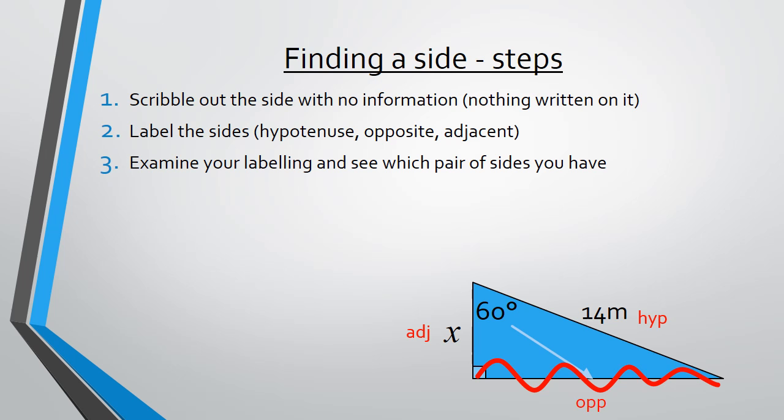Step 3, examine your labelling to see which pair of sides you have. So scribble out the one we scribbled out, goodbye opposite. And adjacent and hypotenuse are going to do a dance for us, so we're looking at adjacent and hypotenuse.